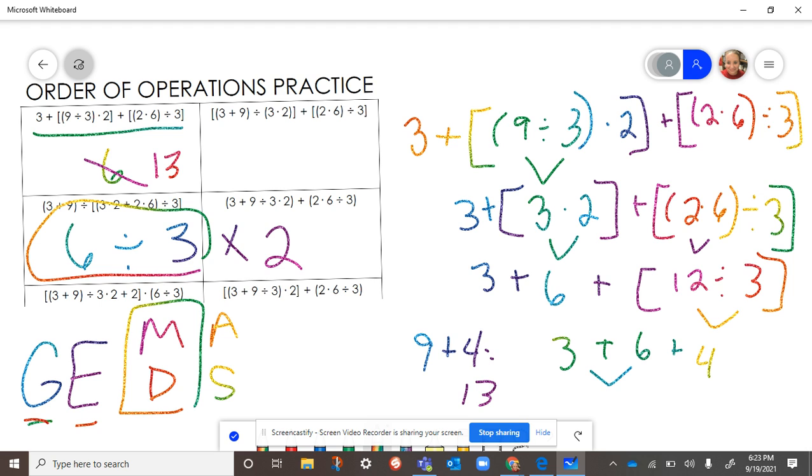Then, if it was opposite, like if it was six times three divided by two, then I would do the multiplication first because the multiplication came first. So whatever's first, you do whatever comes first.